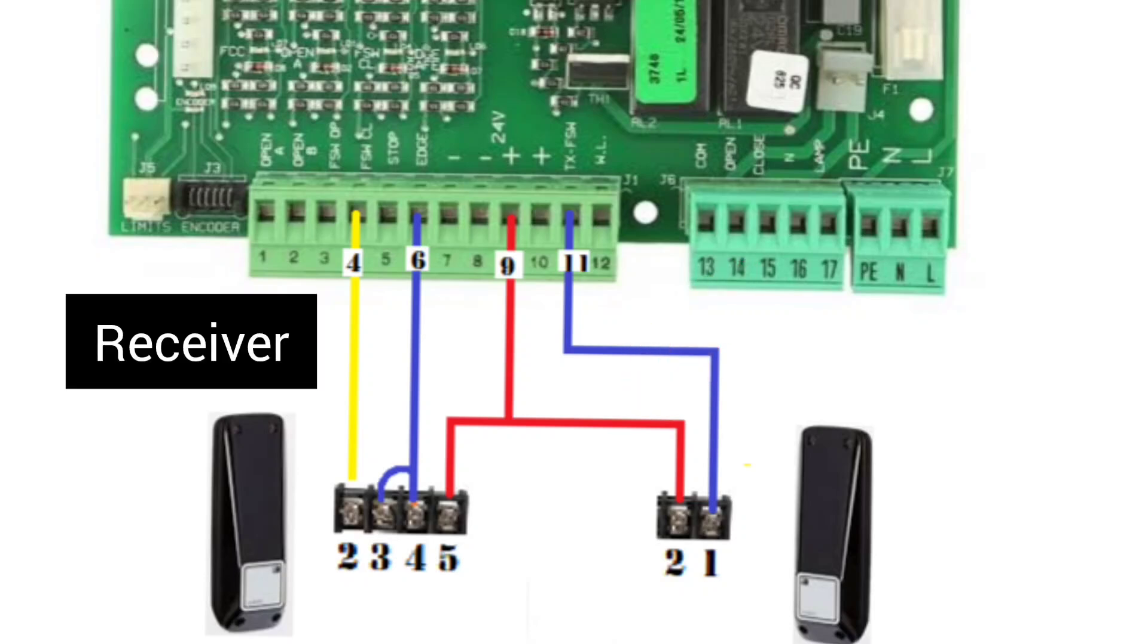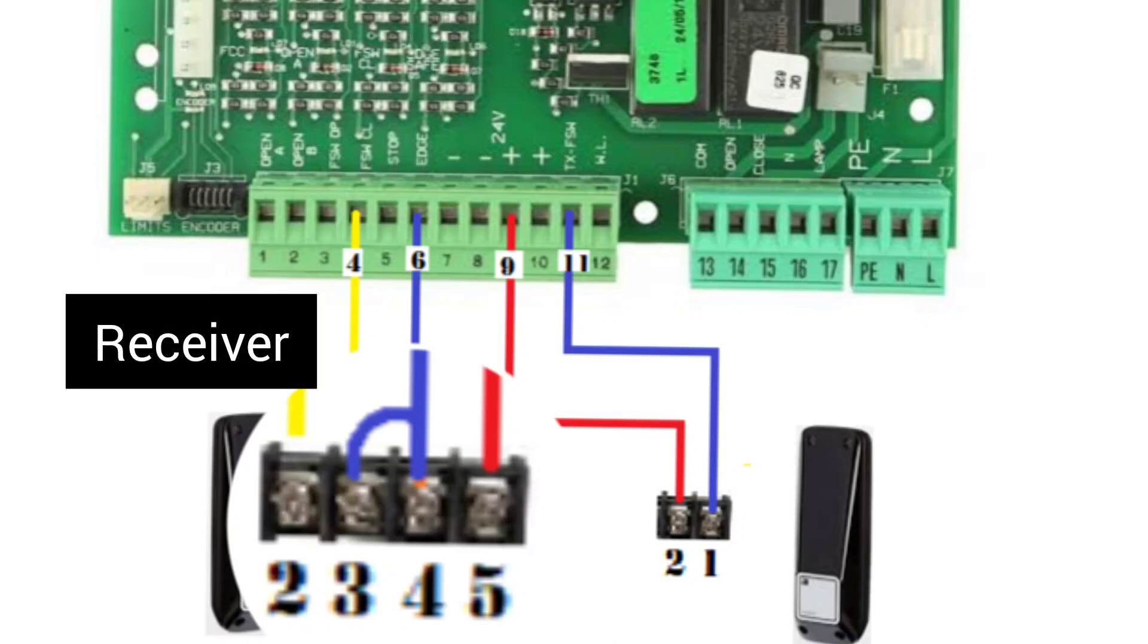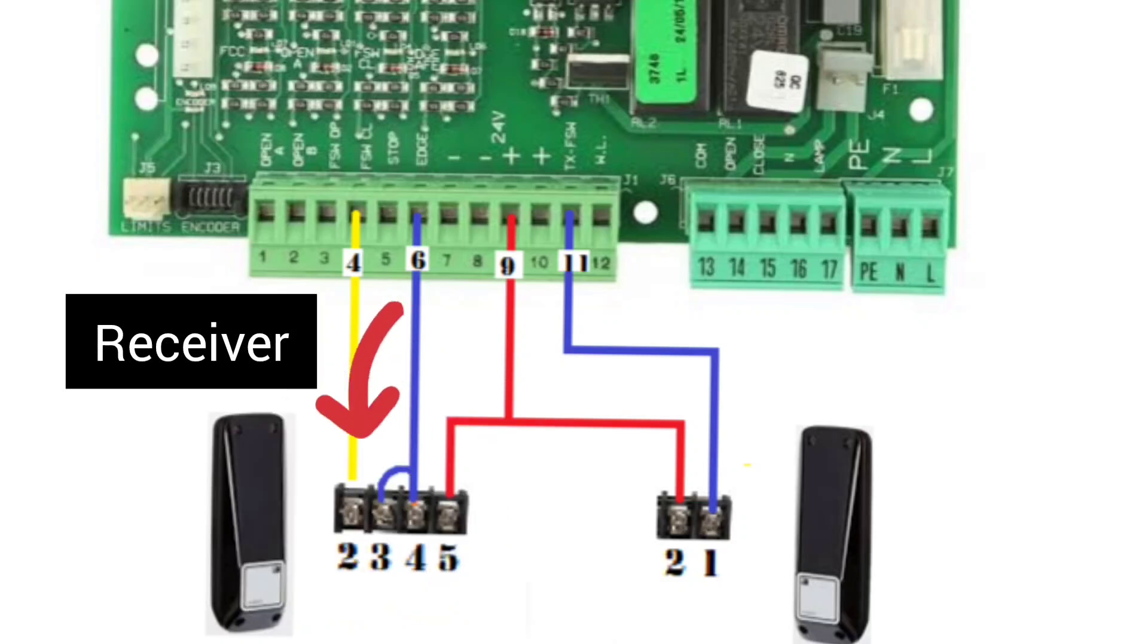Receiver has four terminals 2, 3, 4 and 5. Connect terminal 2 to terminal 4 on board. Make a loop between 3 and 4 and connect terminal 4 to 6 on control board. Connect terminal 5 to 9 on board.